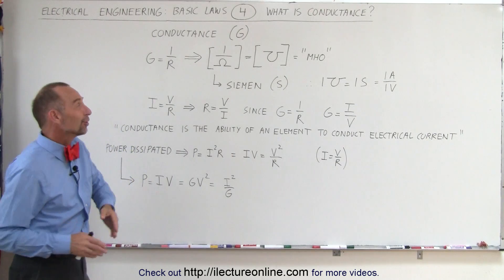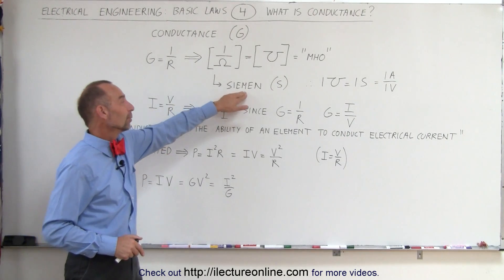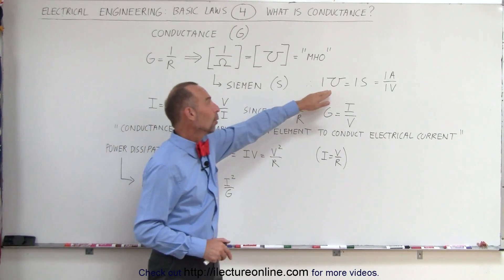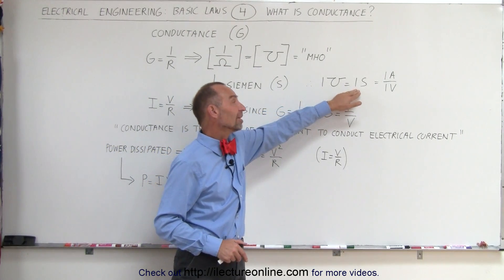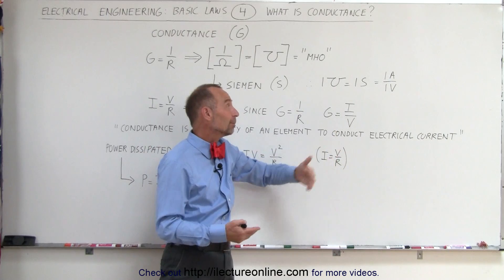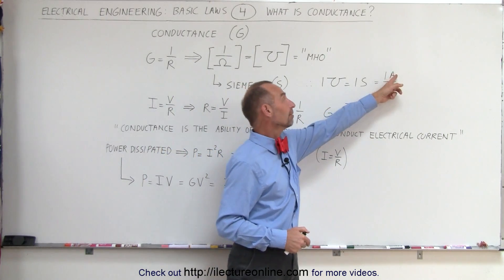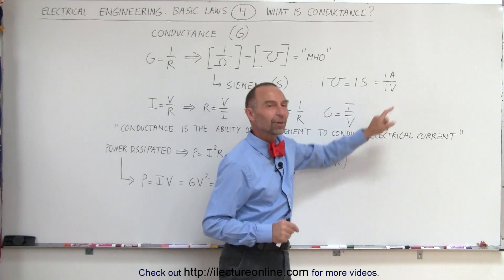A more standard unit for conductance is the siemen. We use the symbol S for the siemen, and therefore one mho is equal to one siemen, and the definition of a siemen or a mho is one amp per volt, the amount of current that can flow per unit volt that's applied to the circuit.